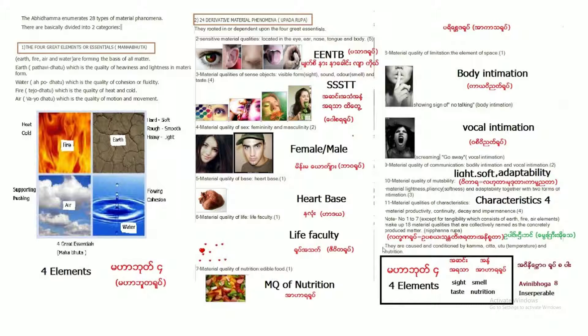Upada lakkhana, thiti lakkhana, jaratha lakkhana, aniccata lakkhana in Pali. So all that material phenomenon are conditioned by kamma, citta, utu, nutrition. That means utu means temperature. Kamma, citta, utu, ahara, supporting the continuity of the material.